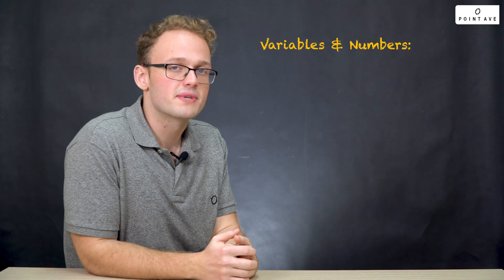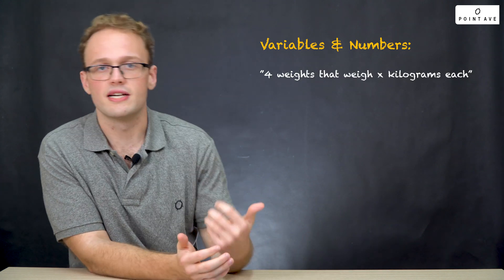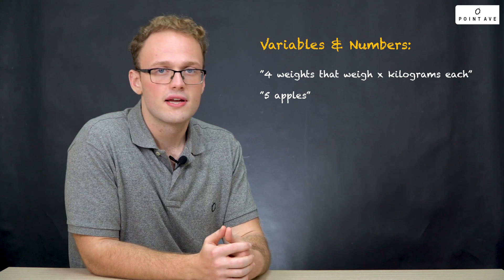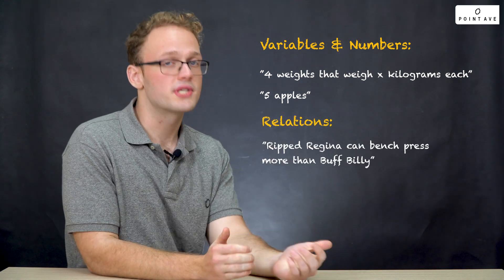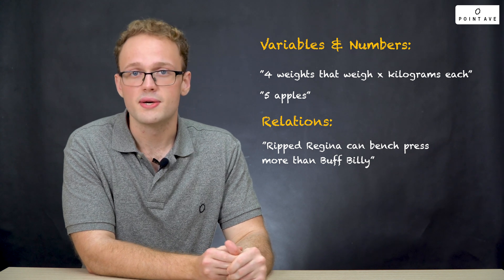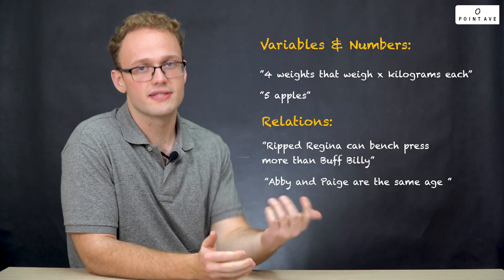Let's look at some examples. For variables and numbers, we can have phrases like 'four weights that weigh x kilograms each,' or things like 'five apples.' For relations, we can have things like 'Ripped Regina can bench press more than Buff Billy,' or 'Abby and Paige are the same age.' With practice, you'll get better at identifying what these key phrases are.